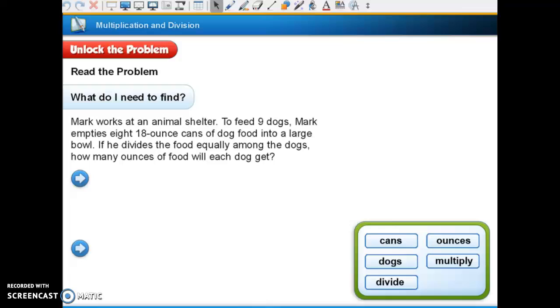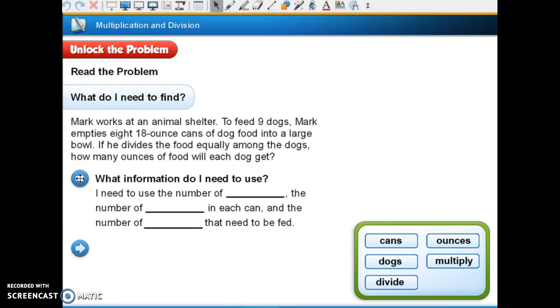Our problem is Mark works at an animal shelter to feed nine dogs. Mark empties eight 18-ounce cans of dog food into a large bowl. If he divides his food equally among the dogs, how many ounces of food will each dog get?